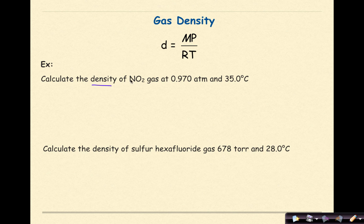Calculate the density of nitrogen dioxide gas at 0.970 atmospheres and 35 degrees Celsius. One of the first things that we need to do is find the gram formula mass of nitrogen dioxide. Nitrogen is 1 times 14, that's 14. Oxygen, there's 2 oxygens, times 16, that's 32. If I add these two together, I will get 46 grams per 1 mole.